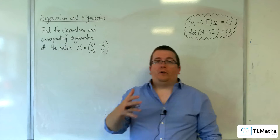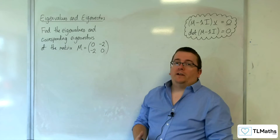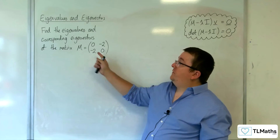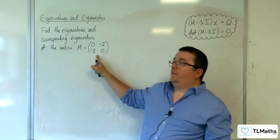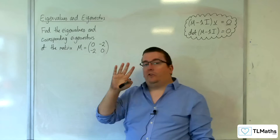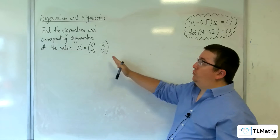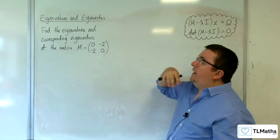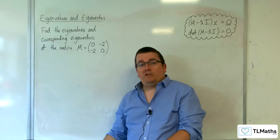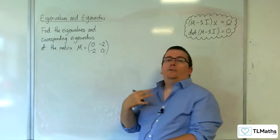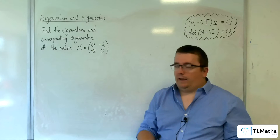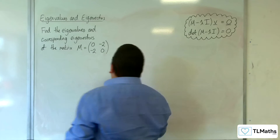Back when I introduced eigenvalues and eigenvectors for the first time, we looked at invariant lines — the invariant lines of this matrix here. What I'm going to do is use that matrix with this method of the characteristic equation to find the eigenvalues and then the corresponding eigenvectors. We're going to use this method instead.